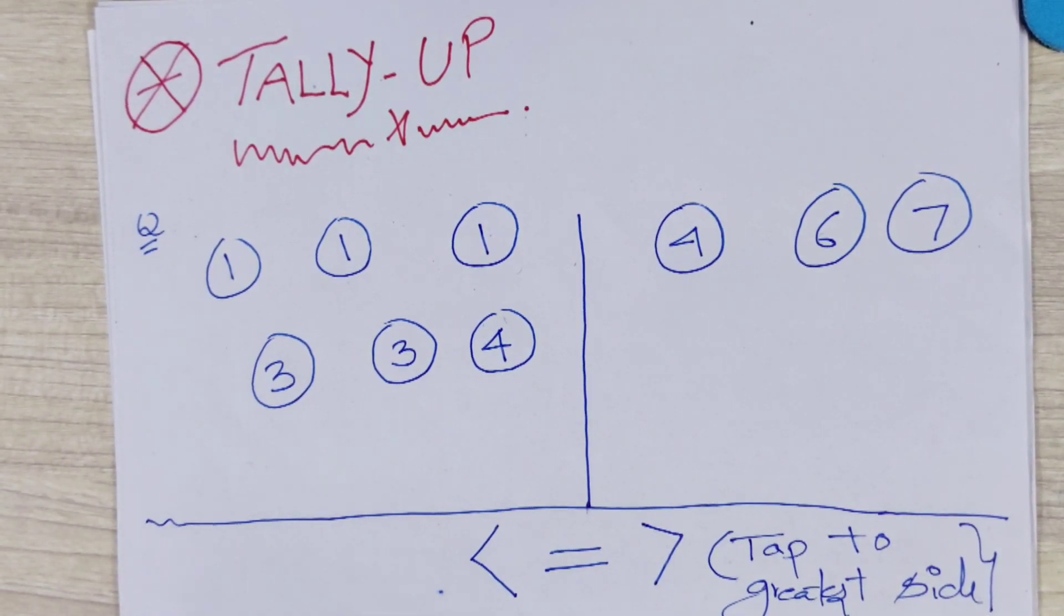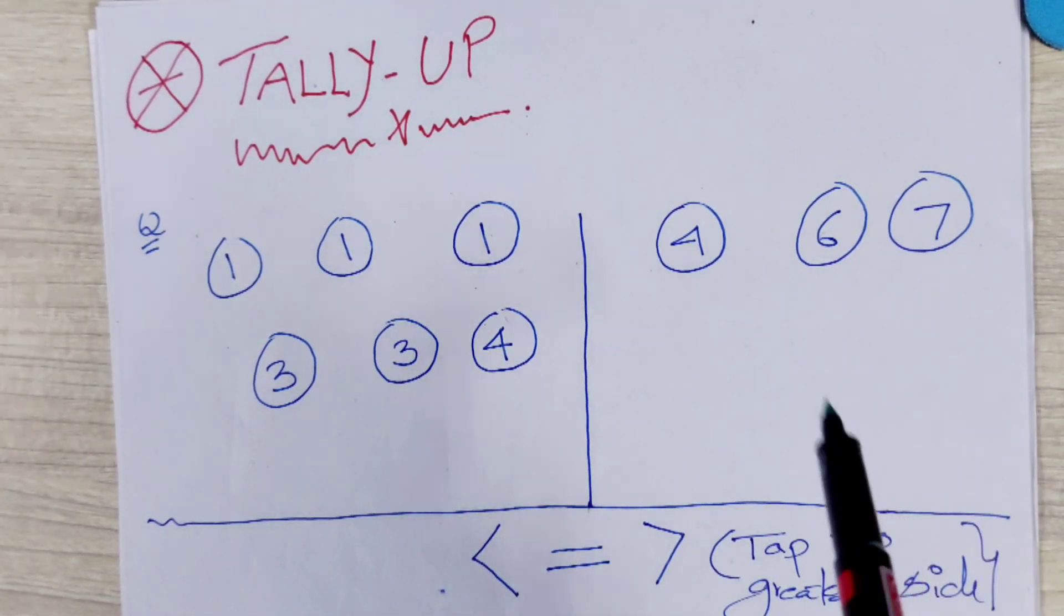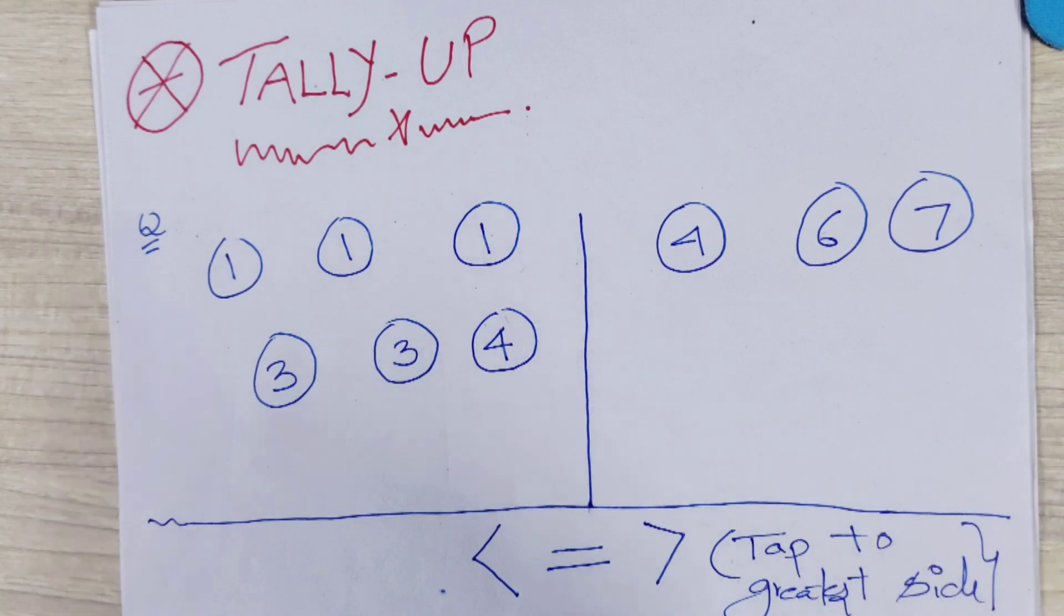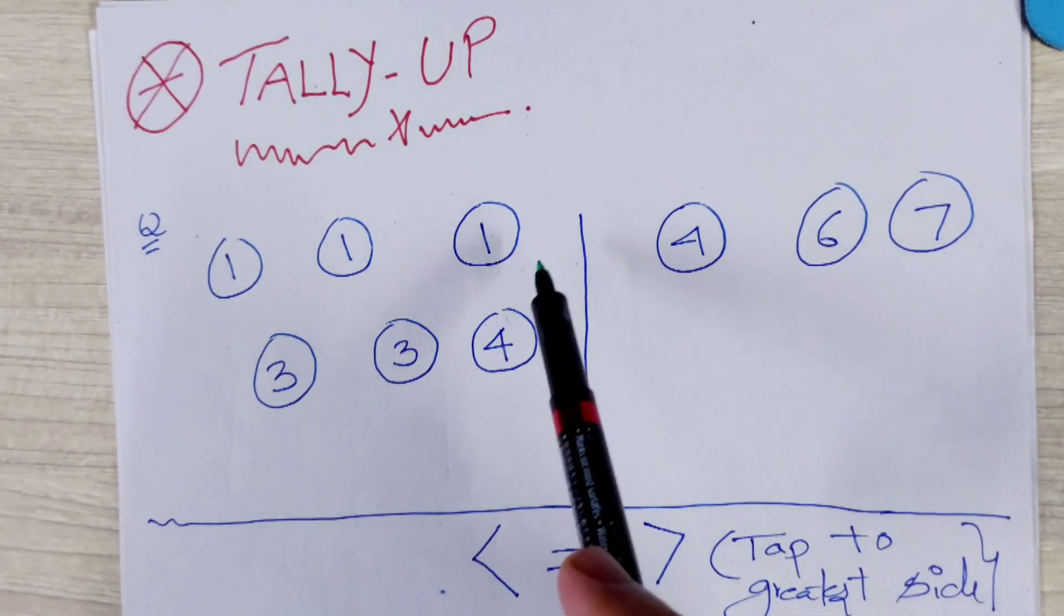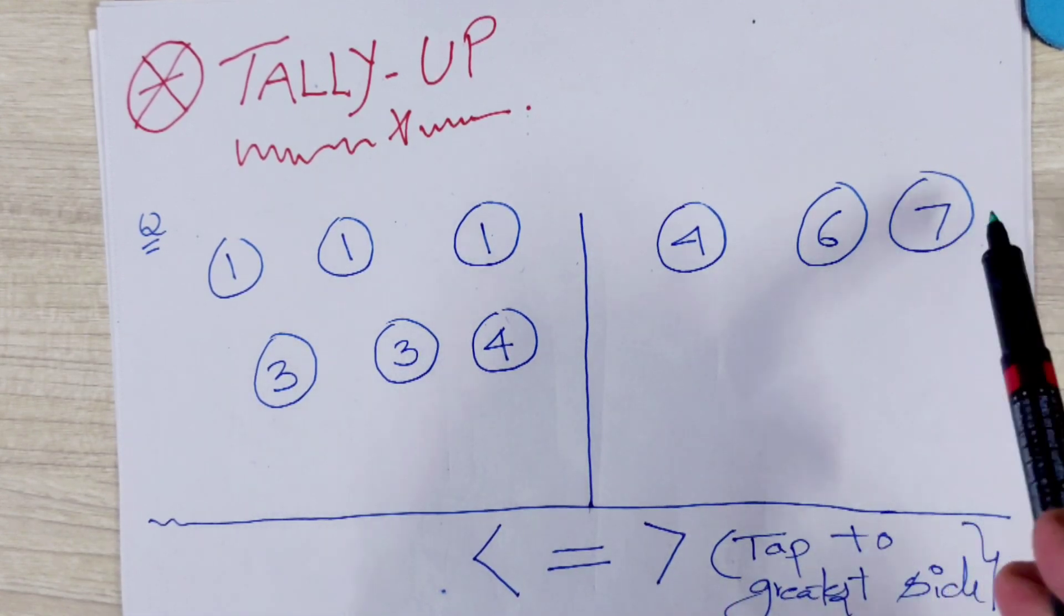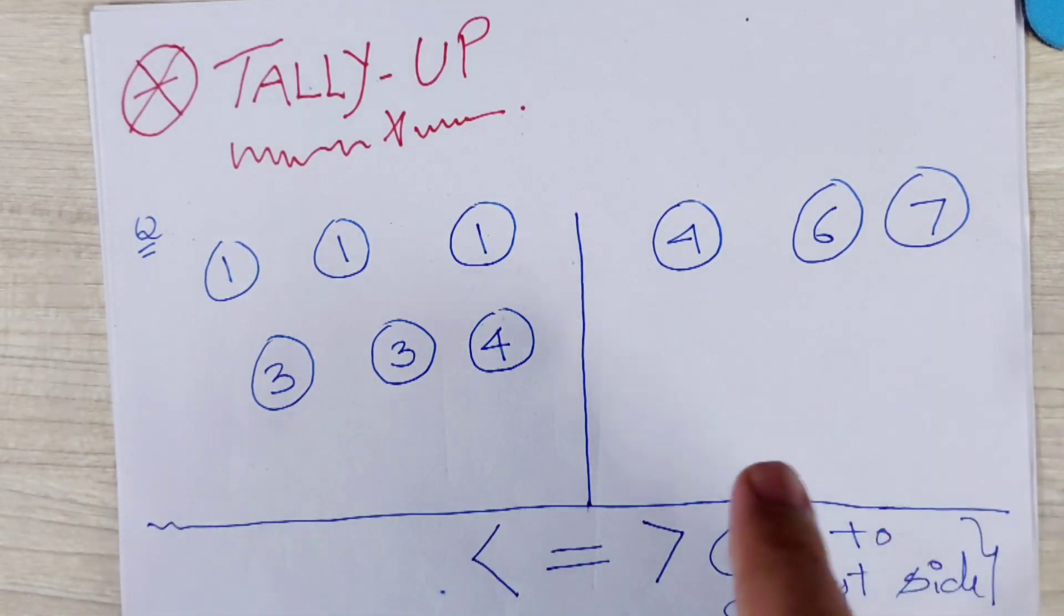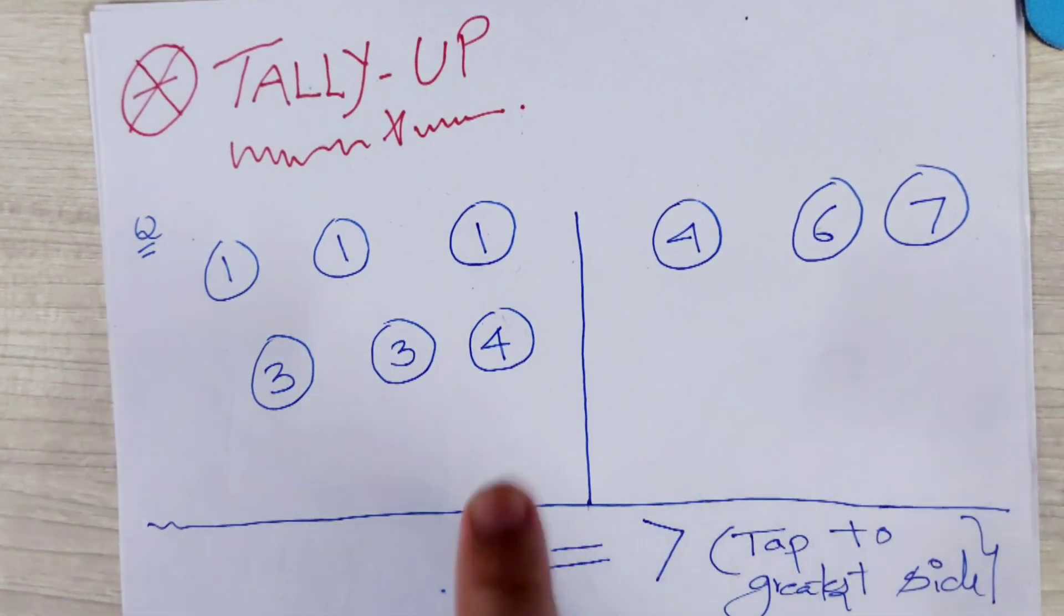So guys, now tally up game in which two portions will be there. This and this. And you have to tap that side which has the highest value. Like here, 1, 2, 3, and 3, 6, 9, and 4, 13. And here 6 of 4, 10 and 7. Then tap here. And if both are equal, then you have to tap equal to.